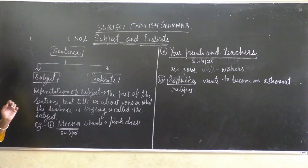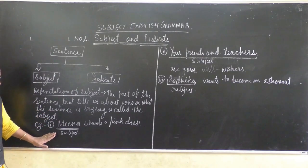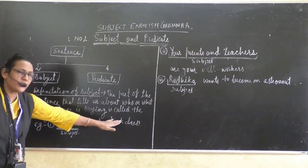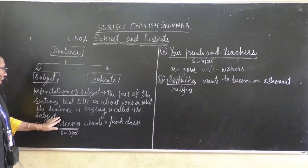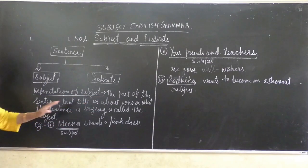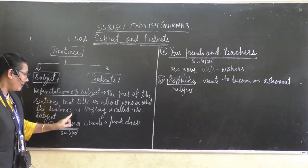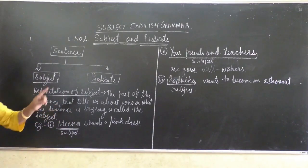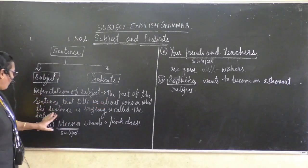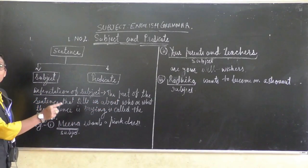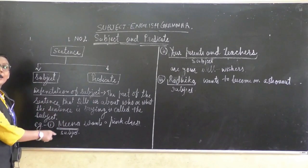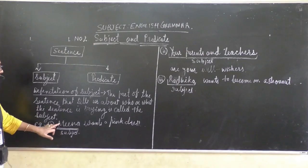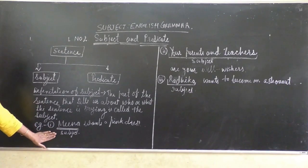For example: 'Nina wants a present.' What is the sentence saying? The sentence is saying that Nina wants a present. The sentence is about who? About Nina. So in this first example sentence, Nina is the subject.